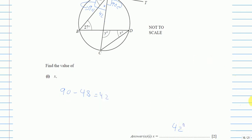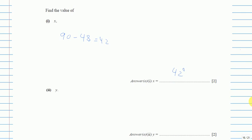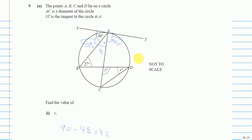Now part two — we have to find Y. This whole triangle: angles in a triangle add up to 180. We know this angle and this angle, and what we don't know is this other angle. I am looking for this angle because opposite angles are equal when lines form an X shape. So if this is Y, then this is also Y.